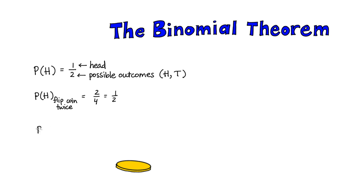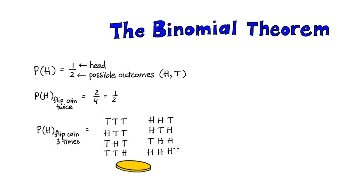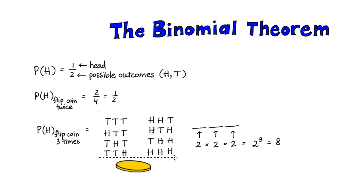What's the probability of getting a head if you flip the coin three times? Now there are eight possible outcomes. We flip the coin three times — in each slot there are two options, heads or tails. So the total number of possibilities is two times two times two, or two to the third, which is eight. Out of those, there are three possibilities where we get heads once. So the probability of getting one head after flipping the coin three times is three out of eight.